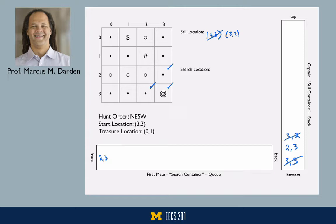That location is 2,3, and from there we're going to mark this as having been discovered. Now, with the search party ashore, the first mate is in control. So we're going to start our investigation loop from the first mate's point of view. The hunt order — north, east, south, west — is the same hunt order that the first mate will use. So we're going to try to investigate from our current location during the investigation loop.